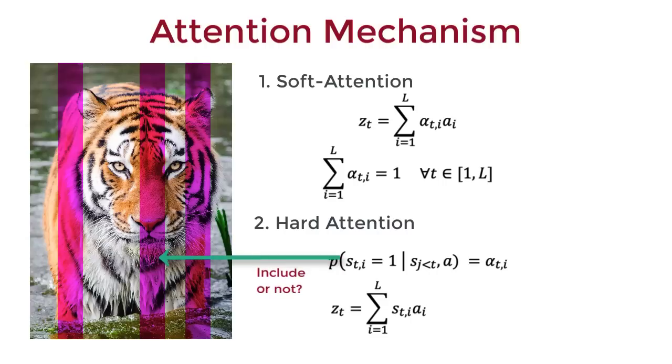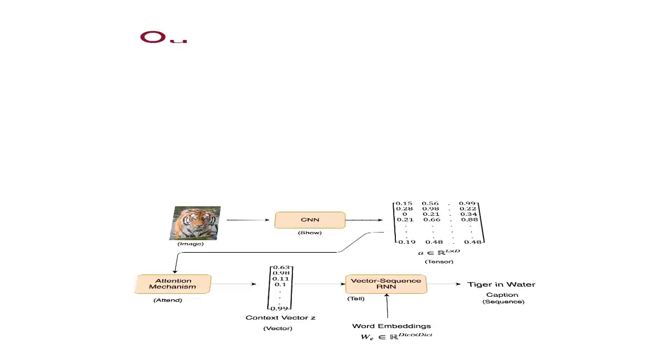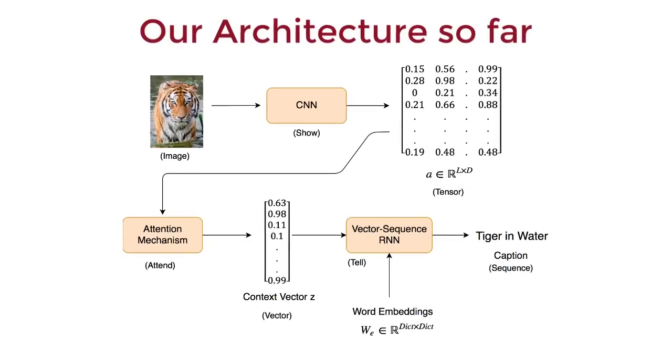sti takes on a binary value of 0 or 1. If 1, it means the i-th region is considered while constructing the t-th word. Otherwise, it isn't. Now, let's get back to our architecture. We change the show and tell architecture by taking a convolution output instead of the FC output. But we need a vector input to our RNN. We extract a context vector z using our attention mechanism. In this way, we can generate words considering different parts of an image.